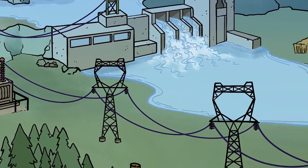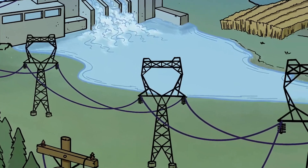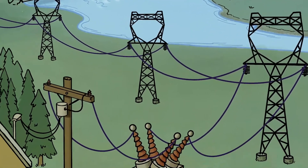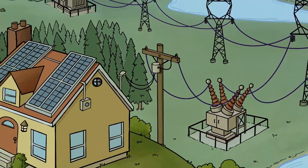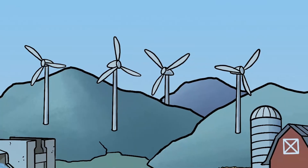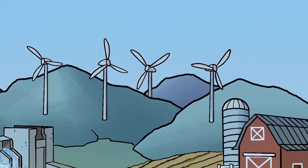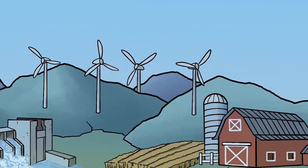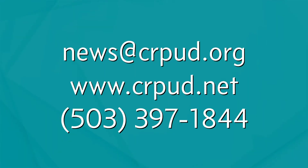The electricity created by these generators then flows through a series of wires, substations, and transformers until it gets to your home or school for you to use. There are other ways to make turbine blades spin to create electricity. One way you might have seen is wind — if you drive toward Idaho, you can see lots of big white wind turbines that create electricity. BPA has 31 hydroelectric dams on the Columbia River and the Snake River. These dams work together to create most of the electricity that you use every day. If you have any questions, please call us, email us, or visit our website at www.crpud.net.